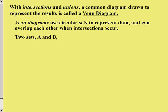For example, let's say we're considering two sets A and B. We've already said that Venn diagrams use circular sets of data and they can overlap each other when the intersections occur. So what we're looking at right now would be two sets of information that has absolutely nothing in common. Whatever information fits into set A it cannot possibly also be in set B and vice versa.